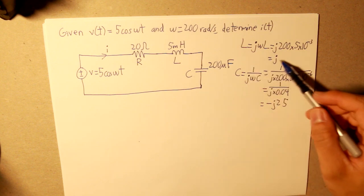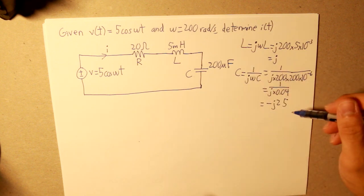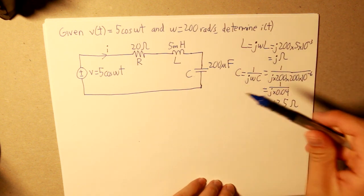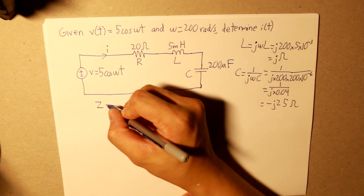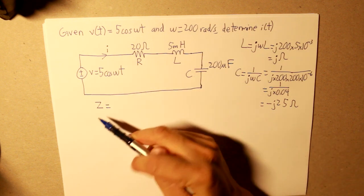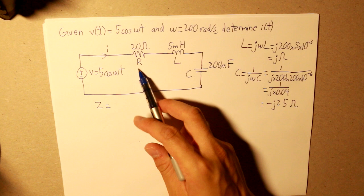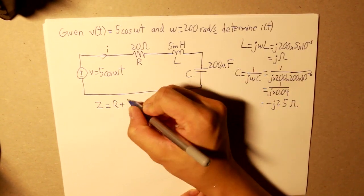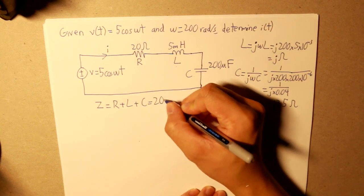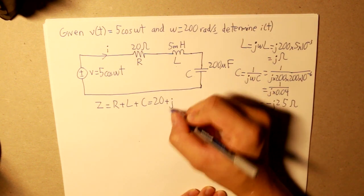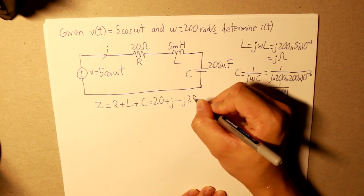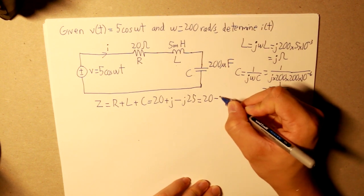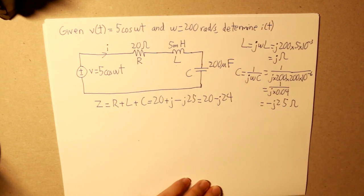So now that we've got our inductance value in ohms, and now that we've got our capacitance value in ohms, let's write these, and now we can add up the total impedance. Now our impedance, as we know, is equal to the resistor plus the inductance plus the capacitance. And that we get 20 plus j minus j25. And our total impedance shall be 20 minus j24.